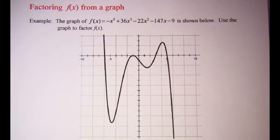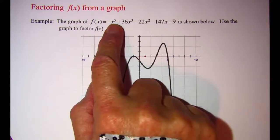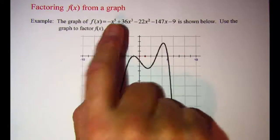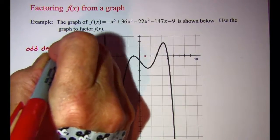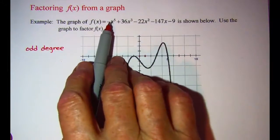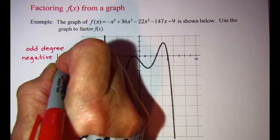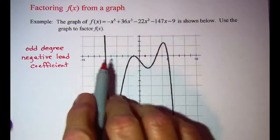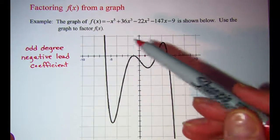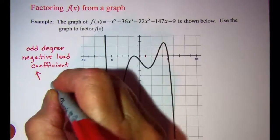In this video we will be factoring a polynomial function from information that we get from the graph of the function. Our polynomial function is a fifth degree polynomial, so we have an odd degree, and we also notice that the lead coefficient is negative. The end behavior of our function should be one arm up and one arm down, and since it's a negative lead coefficient it's going to have end behavior that looks like this.